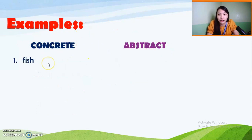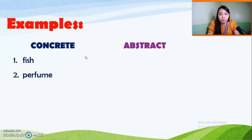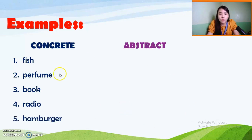Let me give you an example. For concrete nouns, we have 'fish' — you can see a fish, touch it, eat it, smell it, and even hear it swim in a pond. We also have 'perfume' — you can smell it. 'Book' — you can see it and touch it. 'Radio' — you can hear it and see it. And 'hamburger' — you can taste it. Those are all examples of concrete nouns.